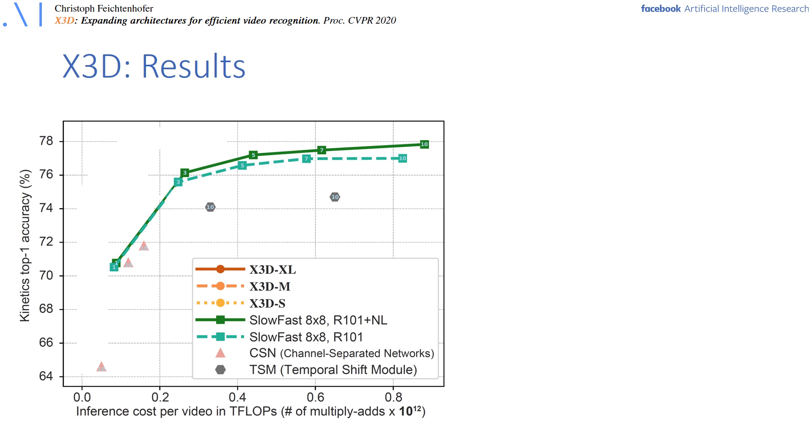Here we compare to the previous work. The graph shows SlowFast models in green, channel-separated networks in pink, and temporal shift module in grey. The number of clips used for testing is shown in the individual points. Comparing to these works, we see that the floating-point operations can be dramatically reduced with X3D, with reductions of up to 10x for large and small models.